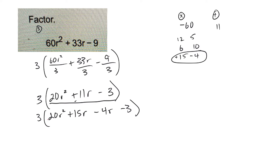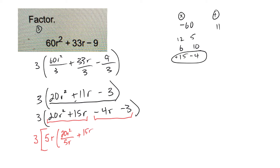Now let's group factor. I'll group the first two terms and the last two terms, throwing in some extra brackets to keep things straight. I have a 3 out front. From the first group I factor out 5R, giving 20R squared divided by 5R plus 15R divided by 5R. From the second group, I'll take out a minus, which changes both the 4R and the 3 to be positive.